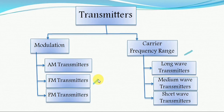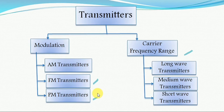The third type is the PM transmitter, where PM indicates pulse modulation. In pulse modulation transmitters, the modulating signal voltage alters some characteristics of the pulse — namely amplitude, frequency, width, and position. Accordingly, different methods of modulation are used in PM transmitters, and these are mainly used in digital applications.